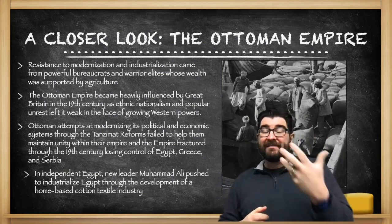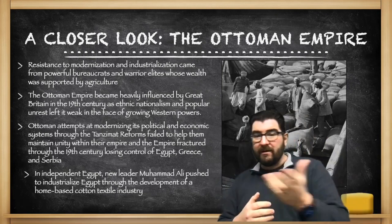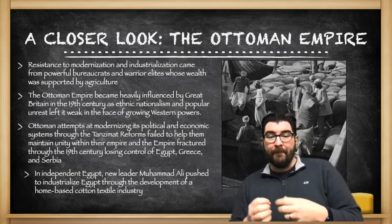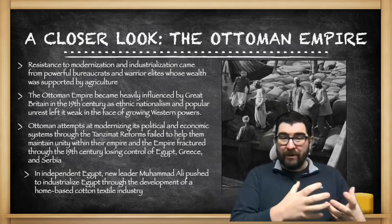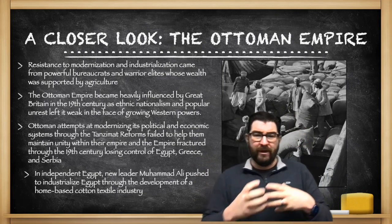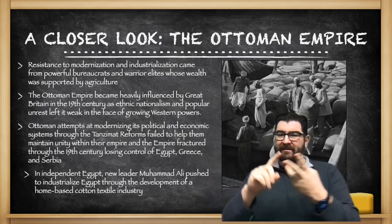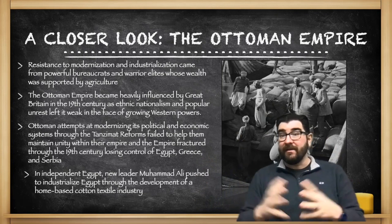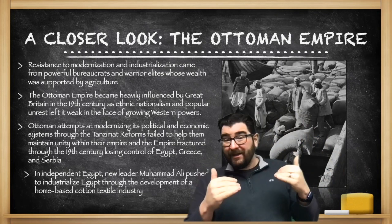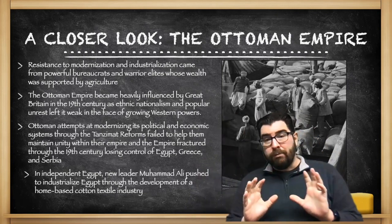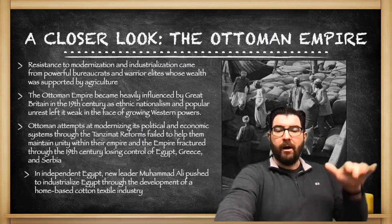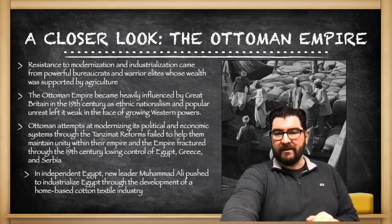The Ottoman Empire will make some attempts at modernizing its political and economic systems through what are known as the Tanzimat reforms, but ultimately these fail to maintain unity and strength within the empire. The empire begins to fracture with regions like Egypt, Greece, and Serbia gaining their independence through the 19th century. In Egypt, a new leader named Muhammad Ali will push to industrialize Egypt through the development of a modern home-based cotton textile industry.